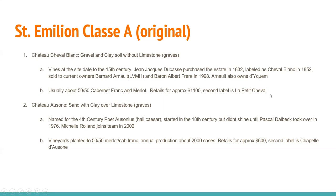Château Ausone sits in that same Graves area over sand with clay and limestone, named for the fourth-century poet Ausonius. It started in the 18th century but didn't shine until Pascal Delbeck took over in 1976. Michel Rolland joined the team in 2002. Vineyards are planted to 50-50 Merlot and Cabernet Franc. Annual production is about 2,000 cases at around $600 retail, and the second label is Chapelle d'Ausone.